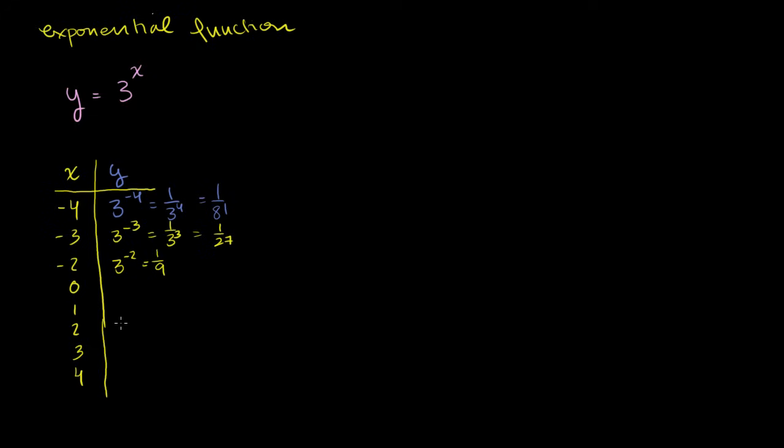And then 3 to the negative 2 power is going to be 1 over 9. And then we have 3 to the 0 power, which is just equal to 1. So we're getting a little bit larger, a little bit larger. But we're going to see we're about to explode. Now we have 3 to the first power. That's equal to 3. Then we have 3 to the second power, that's 9. 3 to the third power, 27. 3 to the fourth power, 81. If we were to put the fifth power, 243.